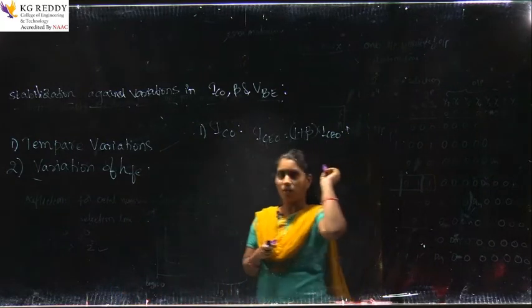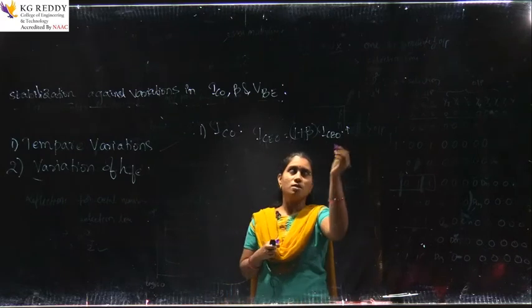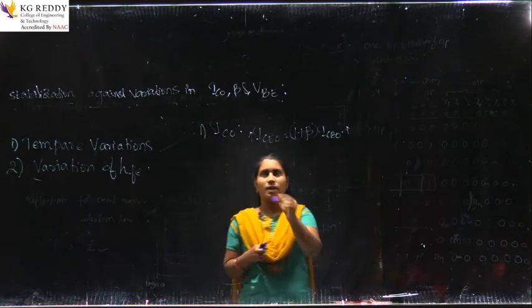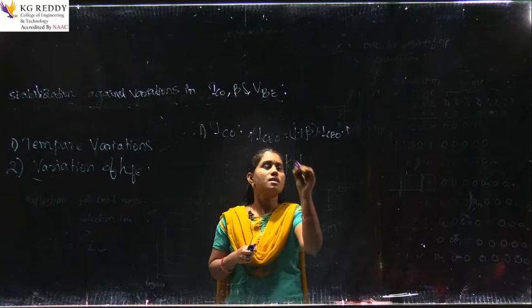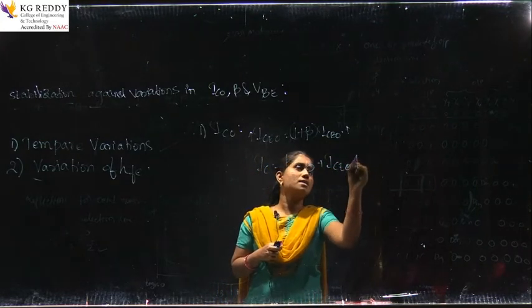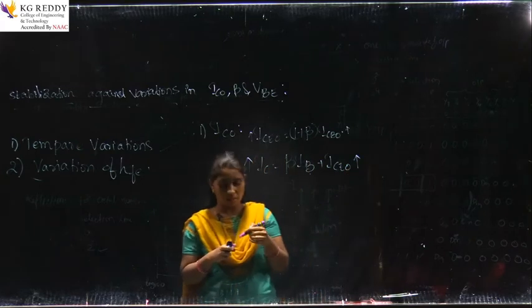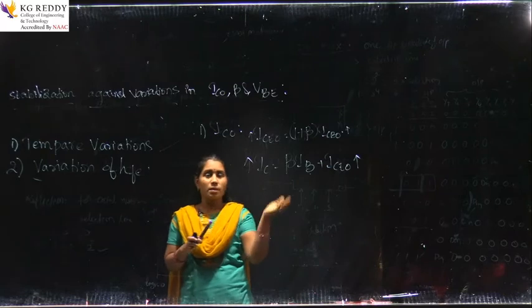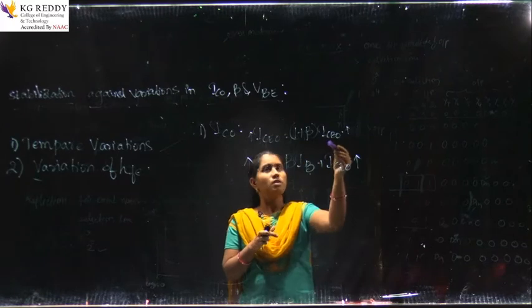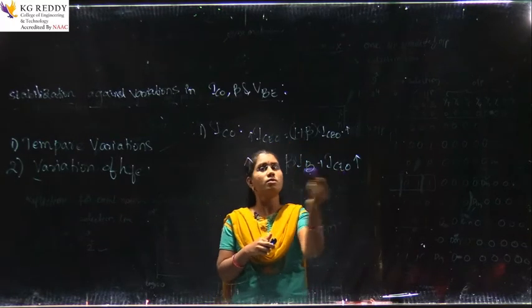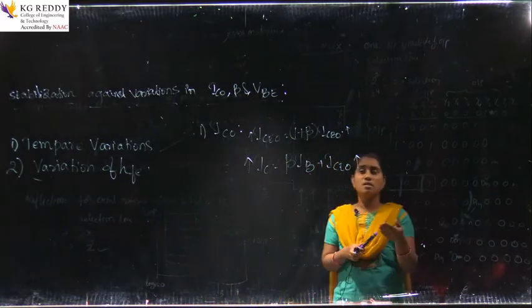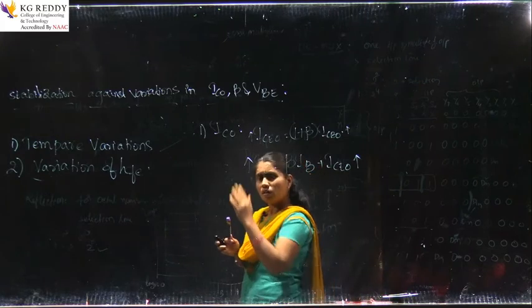As Icb0 increases, the collector current — written as Ic equals beta·Ib plus Ic0 — also increases. So as Ic0 increases, Ic increases. As the temperature increases, Icb0 increases, so Ic0 increases, and consequently Ic increases. As Ic increases, the operating point may be shifted into the saturation region.